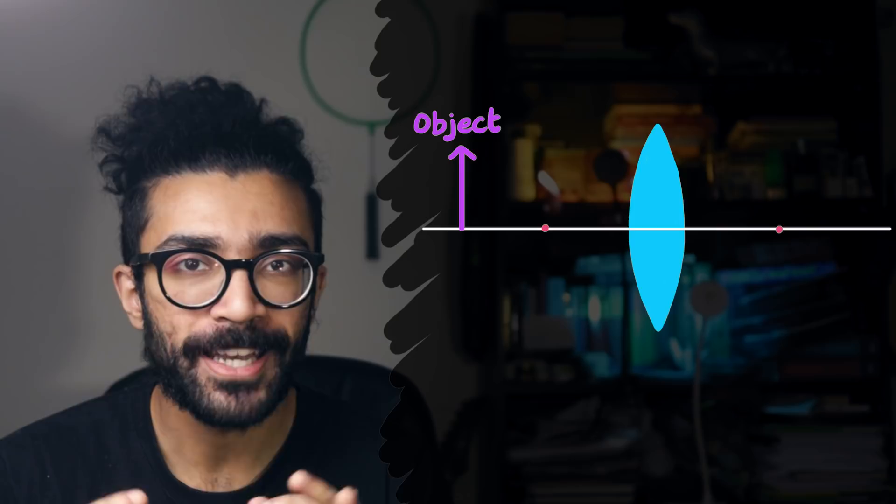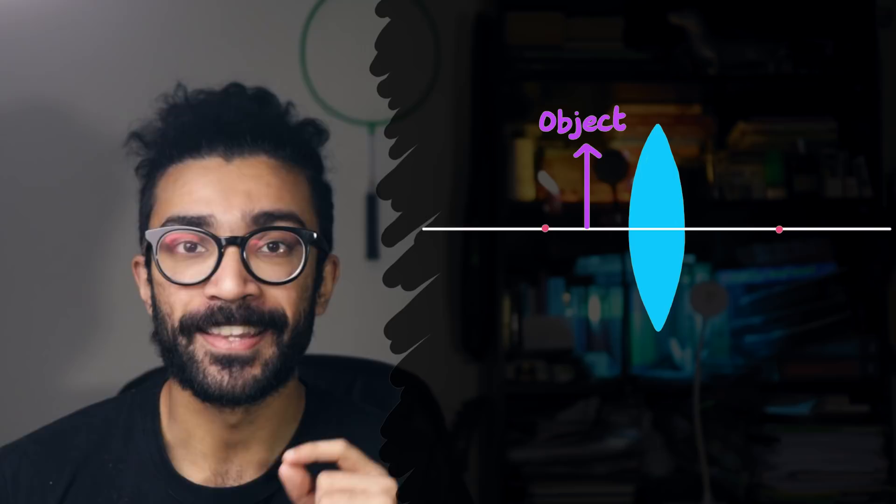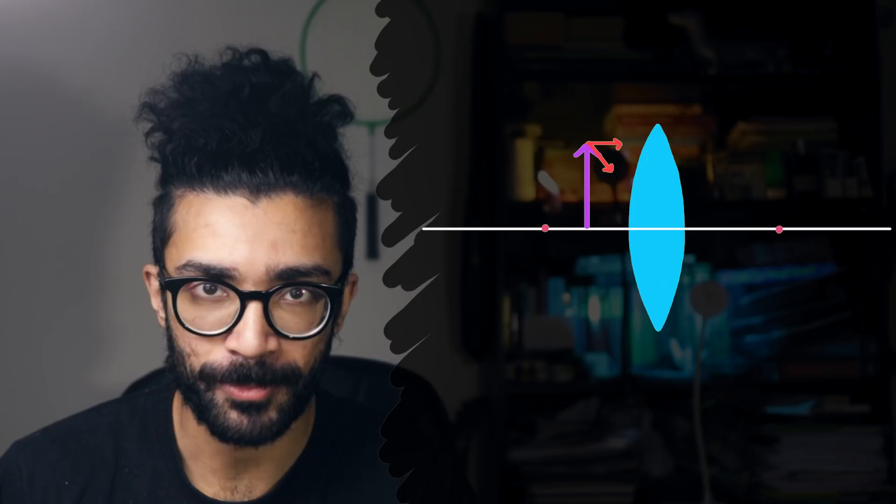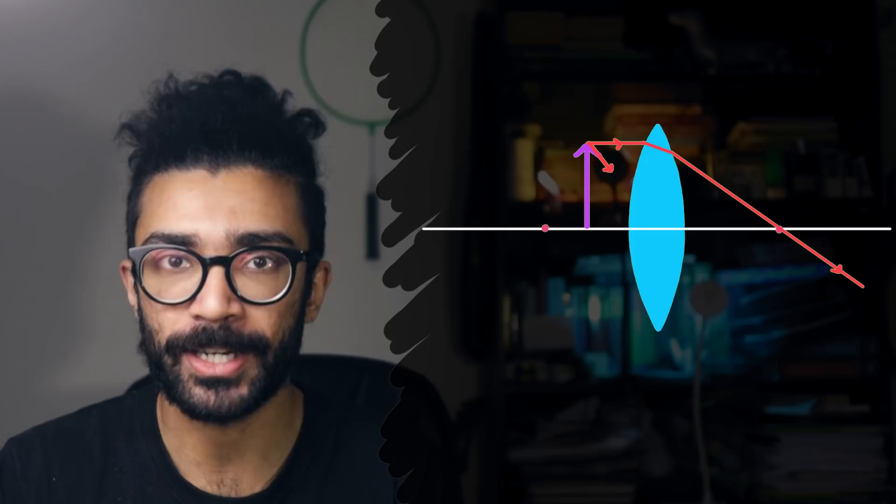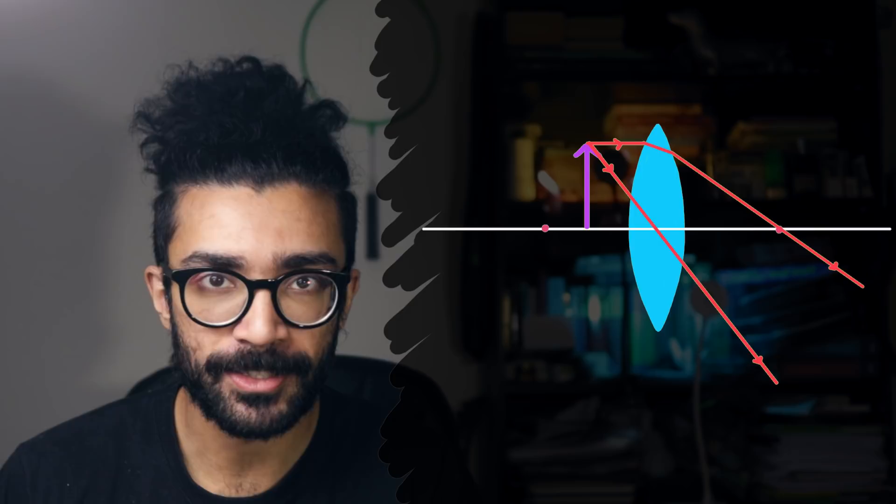It turns out that convex lenses can create virtual images as well as real ones. If we now move our object so that it's placed closer to the lens than its focal point, then this is what will happen. We once again consider two rays of light coming from the tip of our object. The first one is moving parallel to the optical axis, and so it will be refracted by the lens so that it passes through the focal point on the other side. The second is the one passing straight to the center of the lens, which will continue on in the same direction.